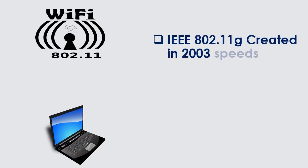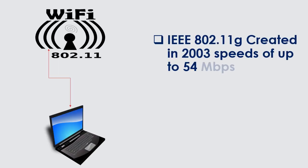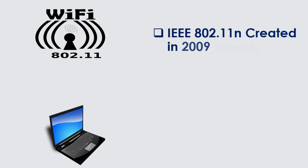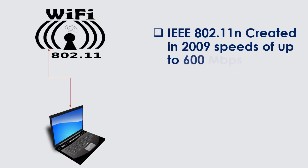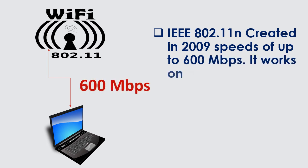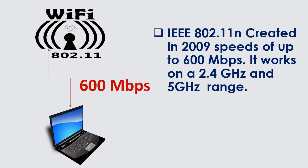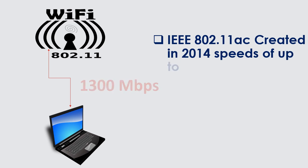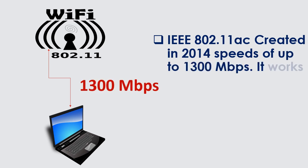IEEE 802.11g, created in 2003, supports speeds of up to 54 Mbps and works on a 2.4 GHz range. IEEE 802.11n, created in 2009, supports speeds of up to 1,300 Mbps and works on a 2.4 GHz range. IEEE 802.11ac, created in 2014, supports speeds of up to 1,300 Mbps and works on the 5 GHz range.